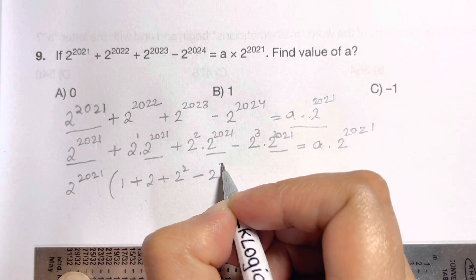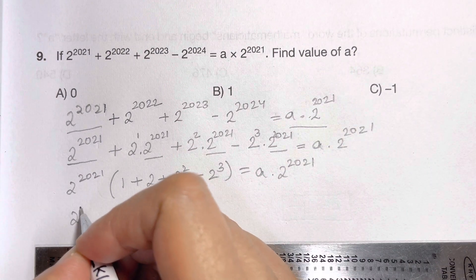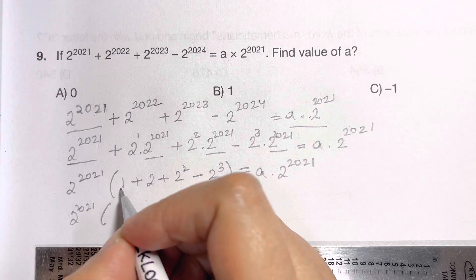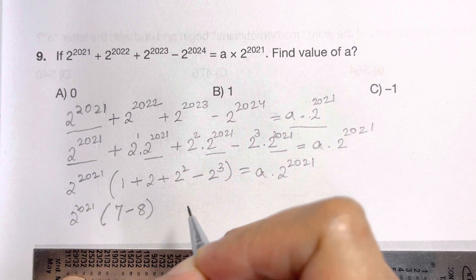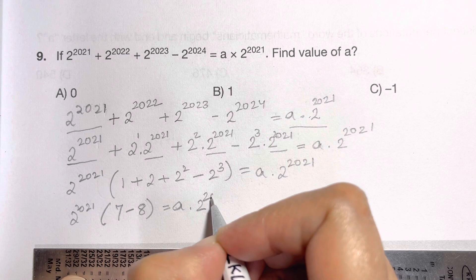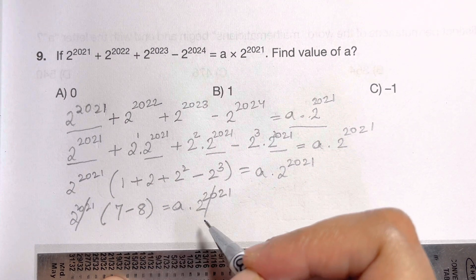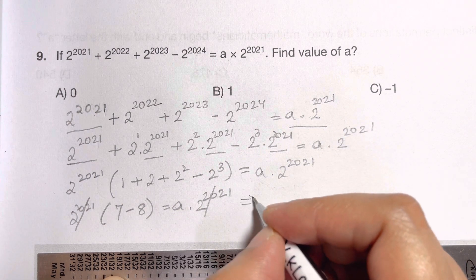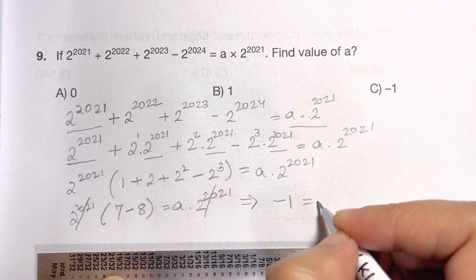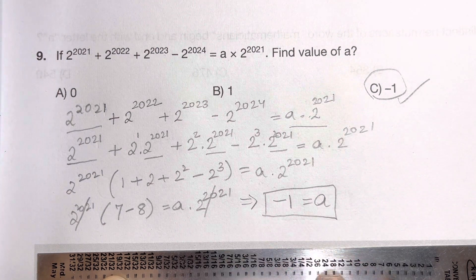Now: 1 plus 2 is 3, plus 4 is 7, minus 2 cubed which is 8. So we have 2 to the power of 2021 times (7 minus 8) equals a times 2 to the power of 2021. Dividing both sides by 2 to the power of 2021 cancels it out, leaving 7 minus 8 equals negative 1, which equals a. So the answer is a = −1, that's answer choice C. If you find this session useful and helpful, don't forget to subscribe. Thank you so much, bye-bye, take care!